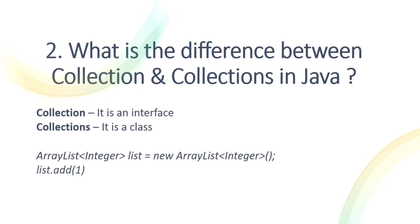We add numbers into the list. ArrayList is a class that implements the List interface, which in turn implements the Collection interface. The Collection interface has methods like add(), remove(), size(), and clear().